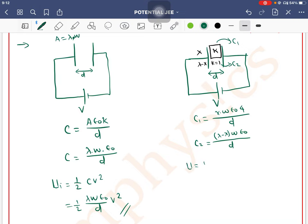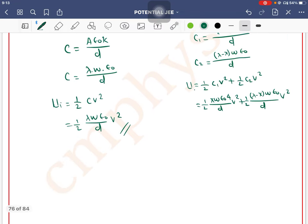Now the energy will be: energy equals half C1 V square plus half C2 V square. So this becomes half times x W epsilon not 4 divided by D V square, plus half times lambda minus x W epsilon not divided by D V square.